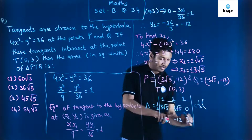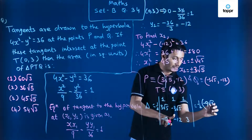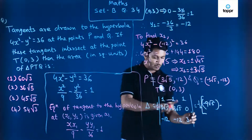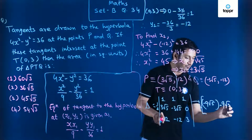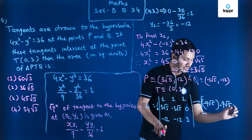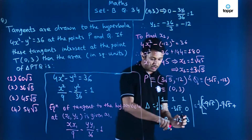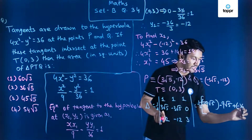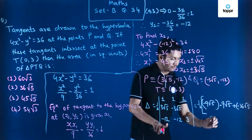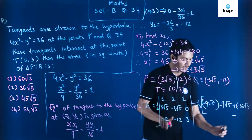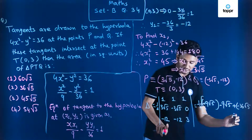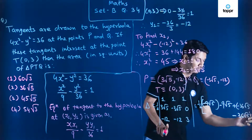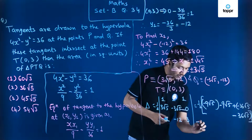Expanding the determinant, the first term gives (-12×3 minus 3×(-12)) which contributes -9√5 terms; expanding further, the last term gives -12 times 3 with appropriate signs giving -36√5 and another -36√5 term.